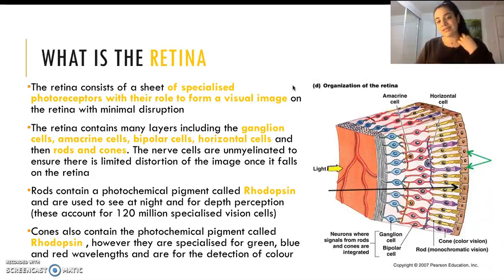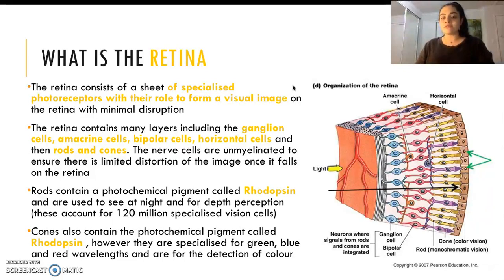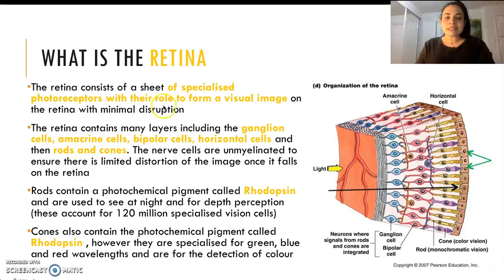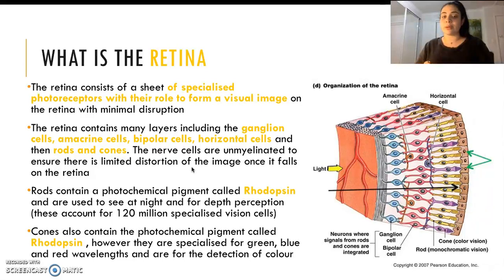When we have rods and cones, these are really important in our vision. Rods are for depth perception and they contain rhodopsin, as cones do. We've got 120 million rods in our retina. Cones are to see colors — specifically the three wavelengths: green, blue and red. They are for detection of colors, and we have a lot fewer of these — about 30 million cones. So we can see that we've got a lot more rods.